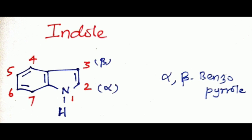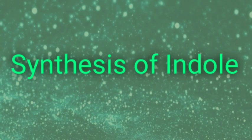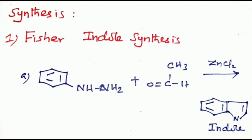Next topic, Synthesis of Indole. This is a very important method, Fisher Indole Synthesis. We have 3,3 sigmatropic rearrangement with aldehyde ketone or ketonic acid with zinc chloride or polyphosphoric acid or sulfuric acid in ethanol. First method: phenyl hydrazine reacts with acetaldehyde in the presence of zinc chloride to give indole.